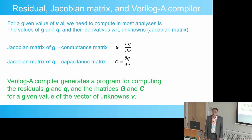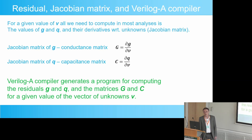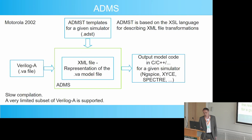The Jacobian matrix of function G is the conductance matrix, and the Jacobian matrix of function Q is the capacitance matrix. The job of the Verilog A compiler is to generate a program that can compute the two vector-valued functions and the two matrices for an arbitrary value of the unknowns.